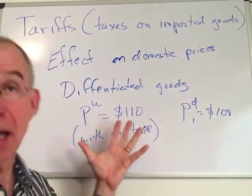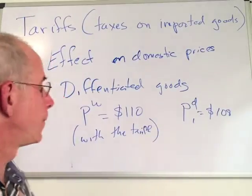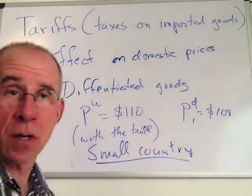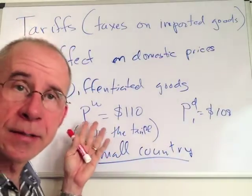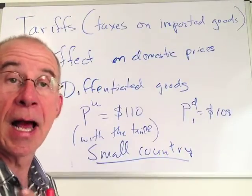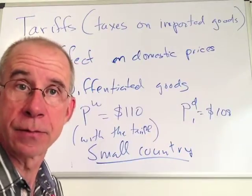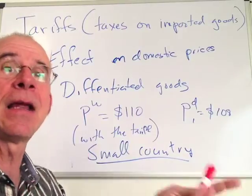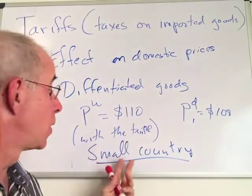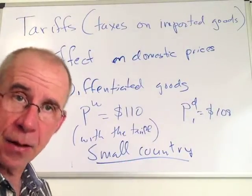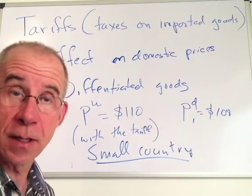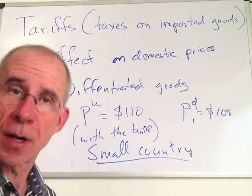One final point: in both instances discussed, we've been implicitly assuming that the country imposing the tariff is a small country. How do we know that? Because the world price internationally doesn't change. Foreigners looking at the domestic market will say: I need to net $100 because I can sell for that anywhere else in the world. So foreigners pass on the full amount of the tariff under the small country assumption. The large country case — where foreigners operate in a market important enough to influence international prices — we'll get to later.